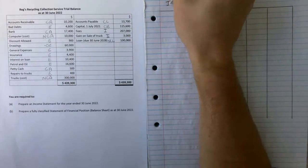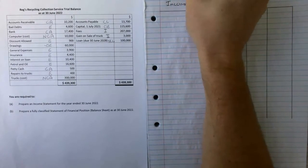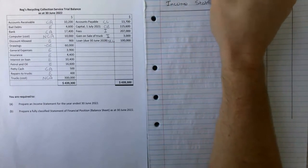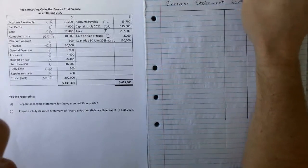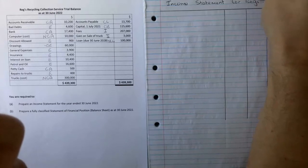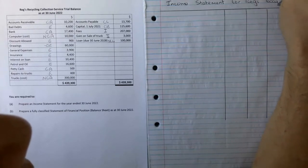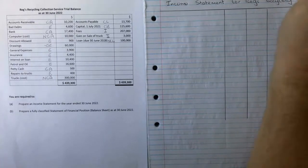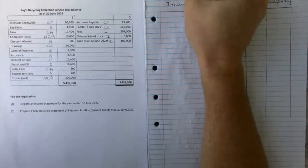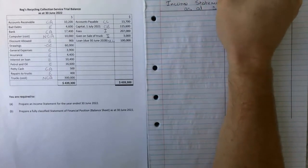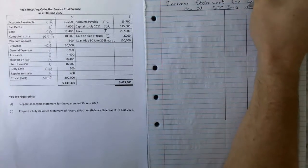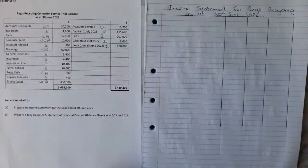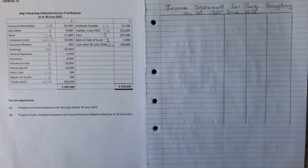Accounts equity fees is our income, gain on the sale of a truck is also an income, and our loan, we just need to look at the dates, it's due in six years time so it must be a non-current liability. First things first we start with our title which says income statement for Regs Recycling as at the 30th June 2022. So we started with our title as we do every single time.